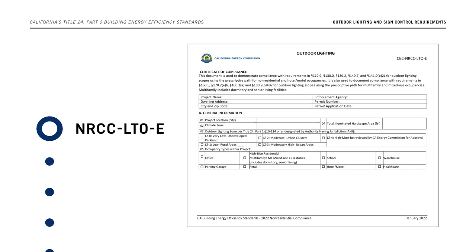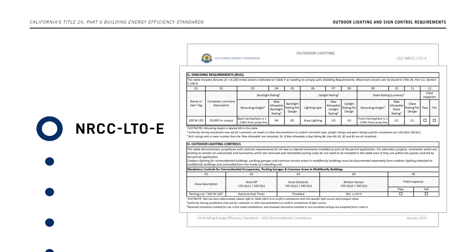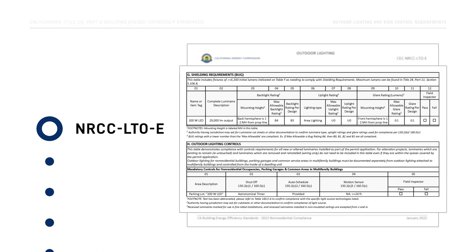The Certificate of Compliance for Outdoor Lighting, NRCC-LTO-E, is required for all non-residential outdoor lighting projects. Luminaire cutoff information must be documented in Section G and outdoor lighting controls in Section H.